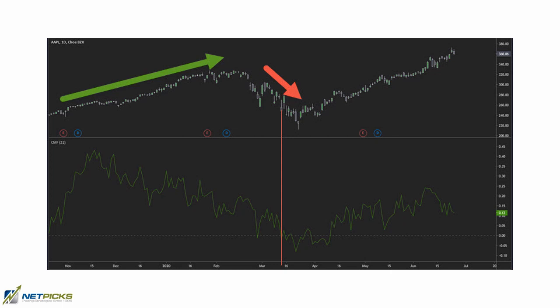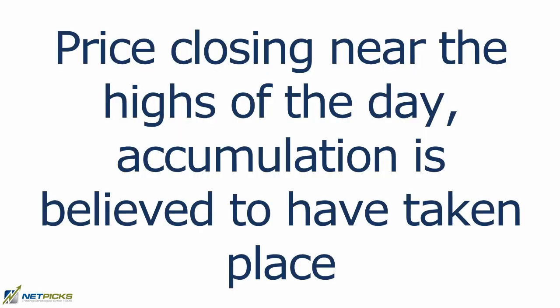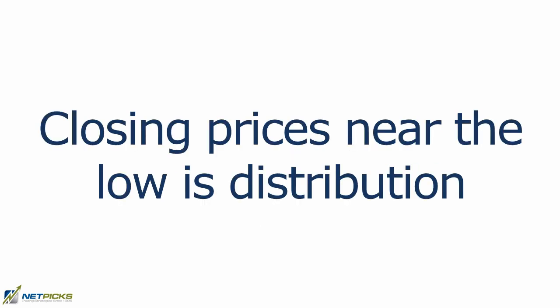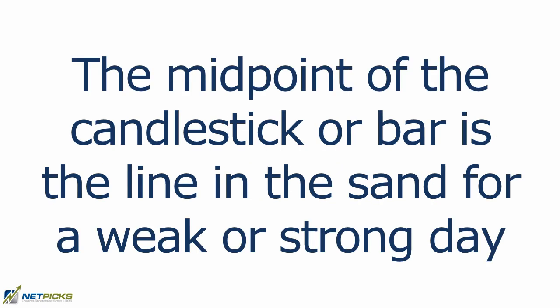The indicator flows across the zero line, which determines the strength or weakness in the instrument. The range between the high and low of each period is part of the calculation. If price is closing near the highs of the day, accumulation is believed to have taken place. Distribution is assumed when closing prices are near the low of the day. The midpoint of the candlestick or bar is considered the line in the sand for a weak or strong day.